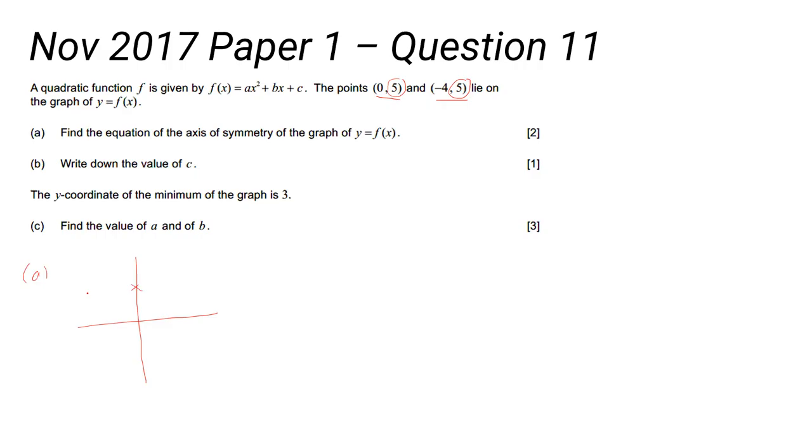It says axis of symmetry. This is a quadratic function. Quadratic functions are symmetrical. If you know that those two points both have the y value of 5, then the line of symmetry must be halfway between them.